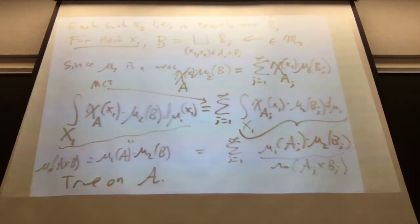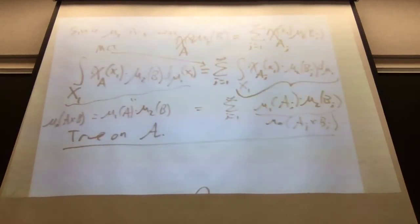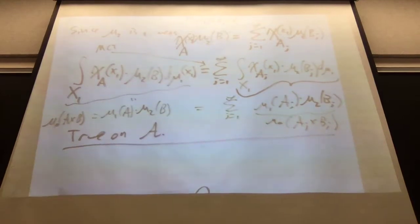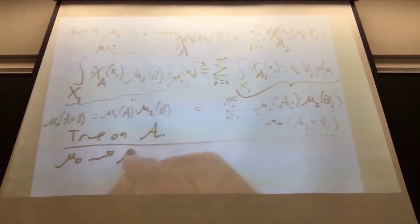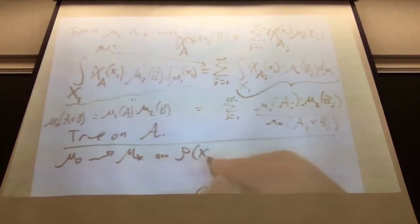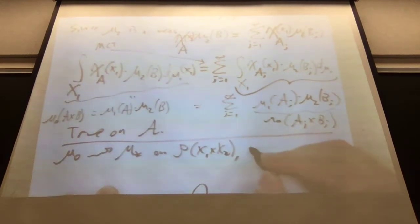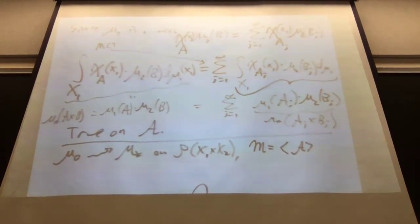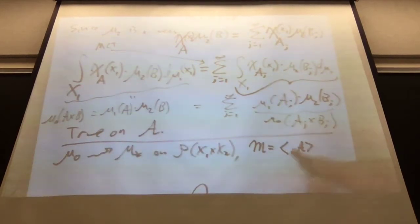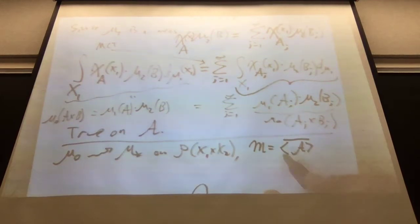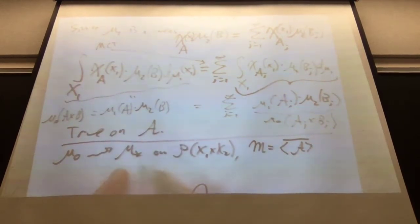Now we know what to do: apply Carathéodory. So mu_0 gets extended to a mu-star on the power set of X_1 cross X_2. We have the set of Carathéodory measurable things; we restrict to that. Mu is the sigma algebra generated by A. Some people prefer to stop there, but if we're really following the Carathéodory construction, that will actually be the closure. Different books handle this differently.